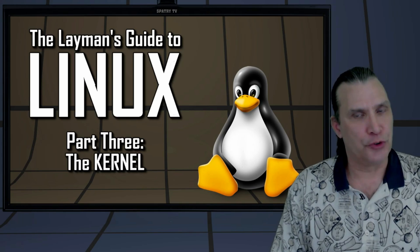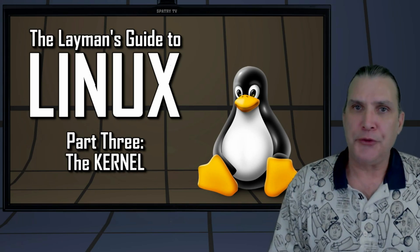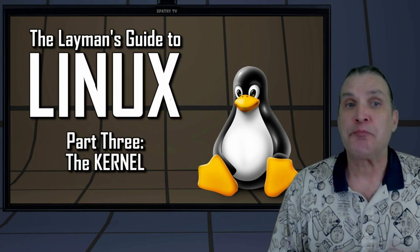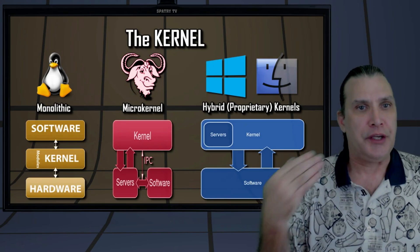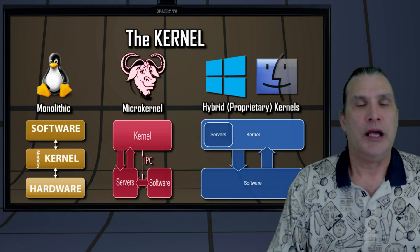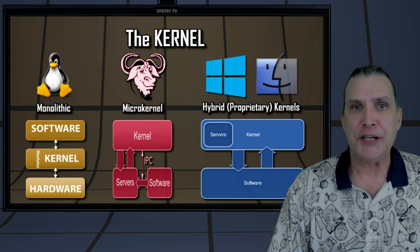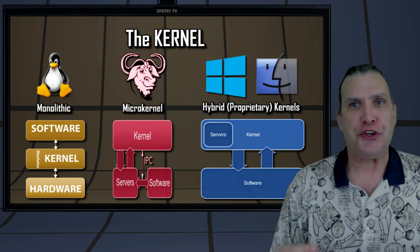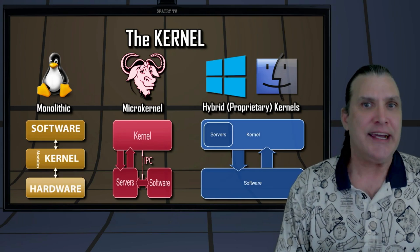Two main types of kernels exist. Monolithic kernels and microkernels. A monolithic kernel runs all the operating system instructions in the same address space for speed. A microkernel runs most processes in user space for modularity. Linux uses the monolithic kernel, and the Herd from the GNU project uses the microkernel. Proprietary operating systems like Windows and Mac use hybrid kernels.